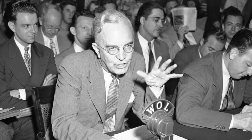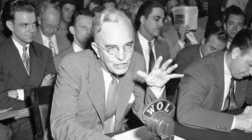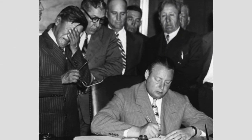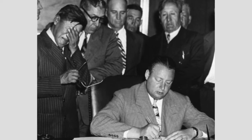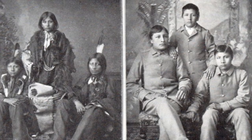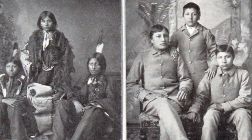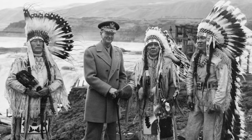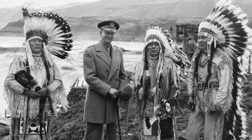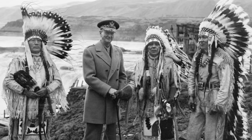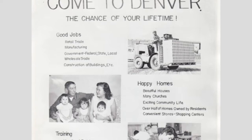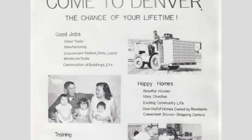Thus began the era of the government's efforts to eradicate the Indian tribes of North America as cultural and political entities. The US government called this their termination policy. Termination policy was shaped by a series of laws with the intent of assimilating Native Americans into mainstream American society. From 1953 to 1964, 109 tribes lost official tribal status. Federal responsibility and jurisdiction of their people were turned over to state governments. Approximately two and a half million acres of Native land was removed from protected status, and about 12,000 Native Americans legally lost their official tribal affiliation.